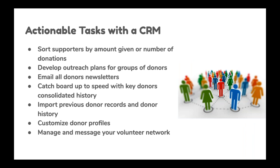Here are some examples of actionable tasks with a CRM. You could sort supporters by a given number of donations or any specific metric. For example, take all your large donors — say, $5,000 or more — and put them in a specific group so you can message them when you really need those large donations to come in.